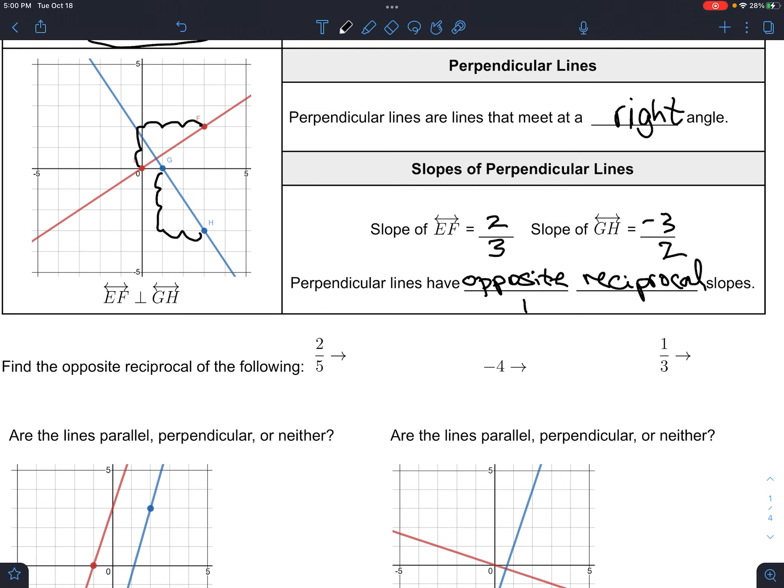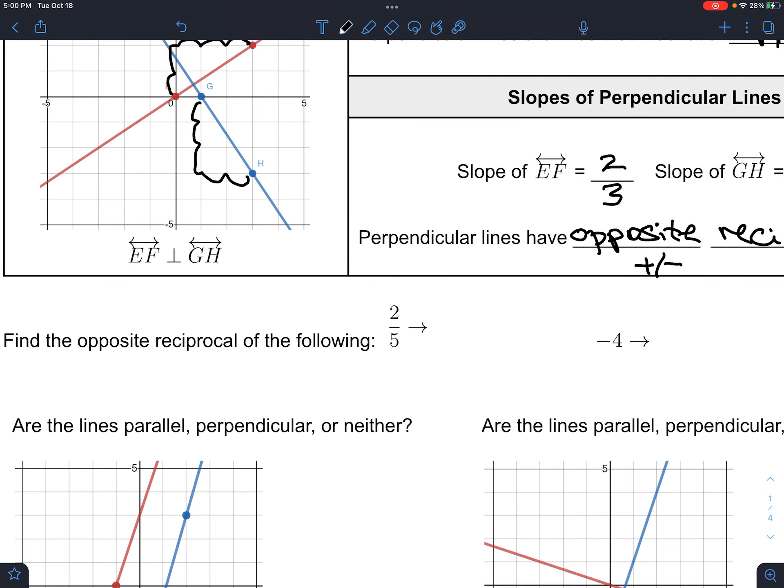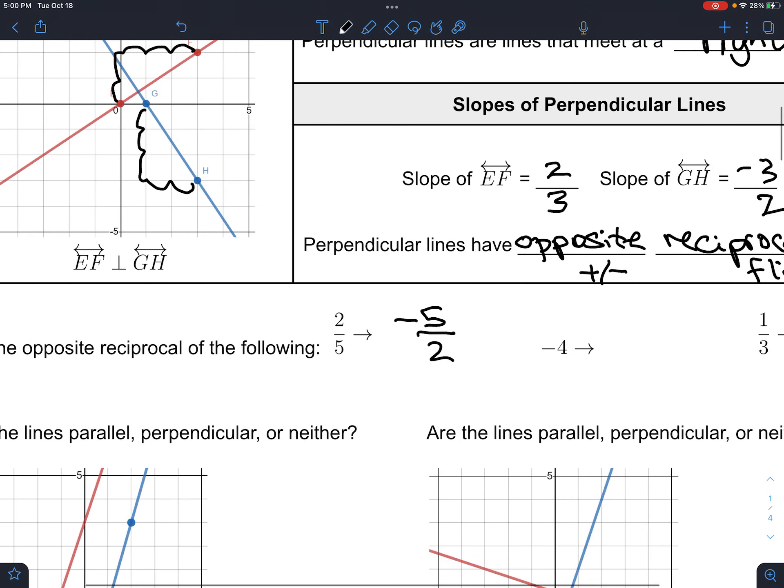So, Opposite means the plus or minus switches. And reciprocal means flip. It flips the fraction. So, for example, let's practice. Opposite Reciprocal of two-fifths, you flip the fraction, is the reciprocal part, and then you make it the opposite sign.